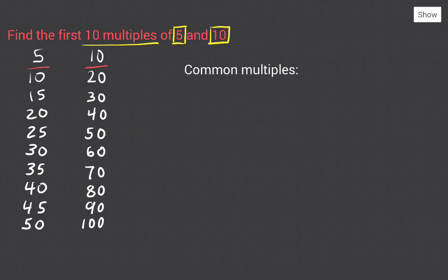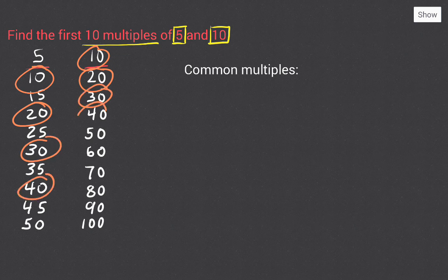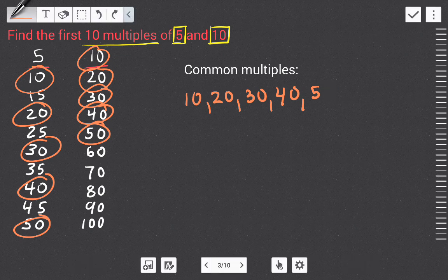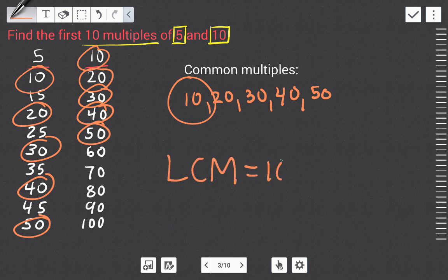Here are the first ten multiples of five and ten. We're going to find what we call common multiples — multiples that appear in both lists. It's easy to spot them: ten, twenty, thirty, forty, and fifty appear in both lists. So my common multiples of five and ten are ten, twenty, thirty, forty, and fifty. We can also find the least common multiple — the smallest of all these multiples — which is ten.